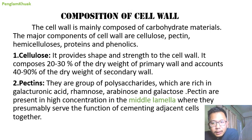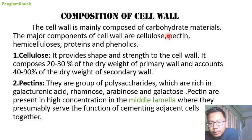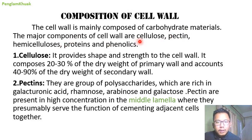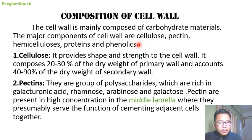Let's see the composition of cell wall. The cell wall is mainly composed of carbohydrates — polymers of carbohydrates. The major components of the cell wall are cellulose, pectin, hemicellulose, proteins, and phenolics — in case of plants.